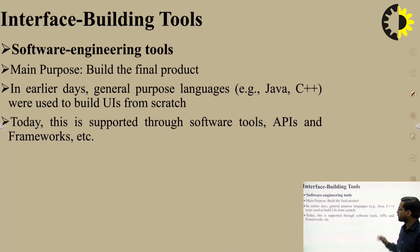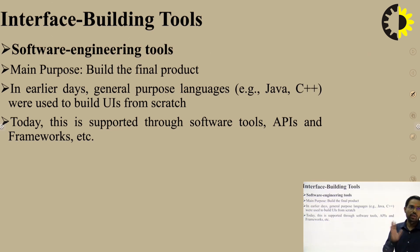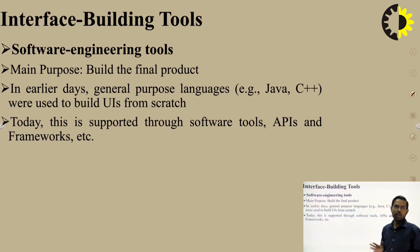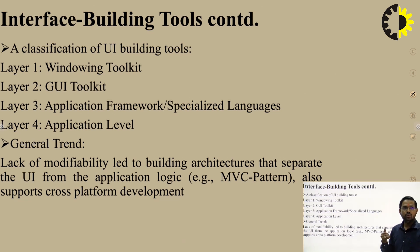Software engineering tools have the main purpose of building the final product. First, mock-up tools are used, then the main product is designed. In earlier days, general-purpose languages like Java and C++ were used to build UI. But today's scenario offers many software tools, APIs, and frameworks for building the final product. The classification of UI building tool layers includes: operating system, toolkit, GUI toolkit, application framework, and application layer.